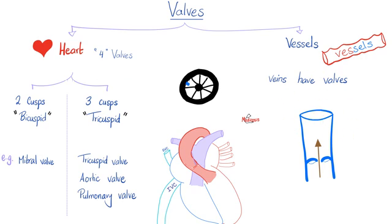The mitral valve is between the left atrium and the left ventricle. The tricuspid valve is between the right atrium and right ventricle. These are atrioventricular valves — between the atrium and the ventricle. Above them are the aortic and pulmonic valves, which we call semilunar valves, sometimes called AP valves — A for aortic, P for pulmonic. Mitral and tricuspid lie below aortic and pulmonic. Four chambers, four valves, and four pulmonary veins.